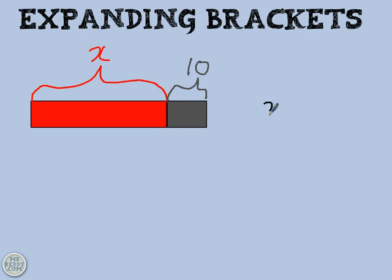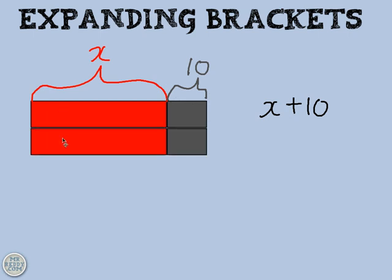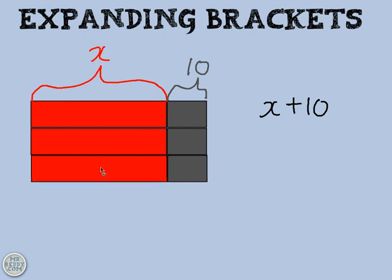Let me write that in an algebraic form, x add 10. Hopefully you can see that's x add 10. Now then, what happens if I double it? It would look like this, wouldn't it? I'd have x plus 10 and another x plus 10. And if I triple it, I would have that. And if I quadruple it, I would have that.